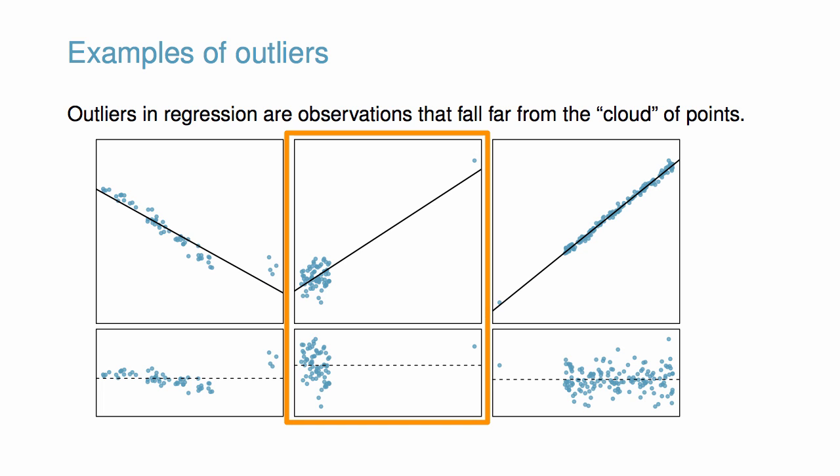In the middle panel, there is no obvious trend in the main cloud of points, and the outlier on the right appears to largely control the slope of the least squares line. This provides one more example of an influential point.